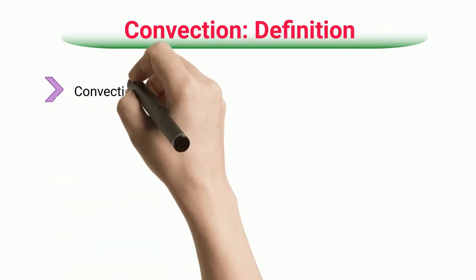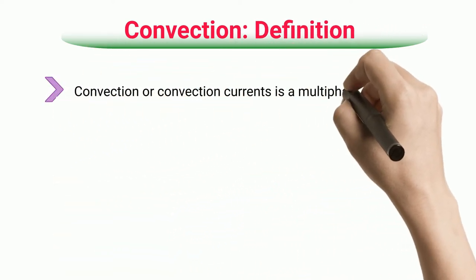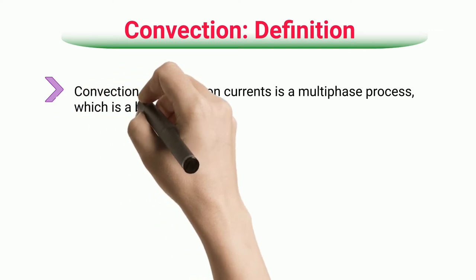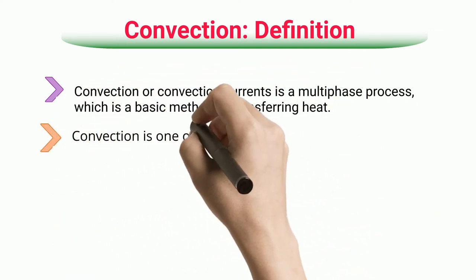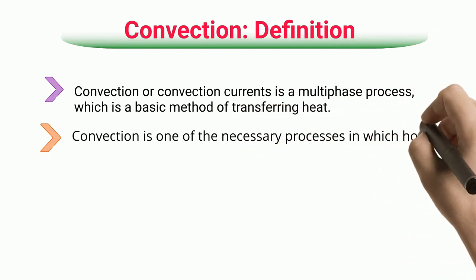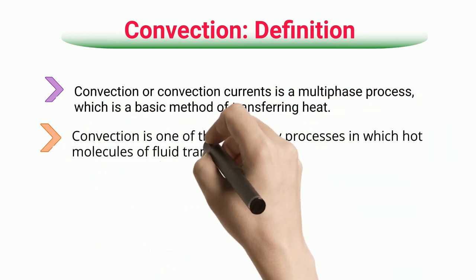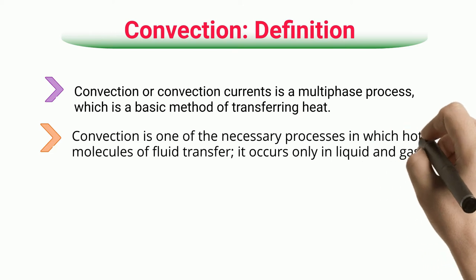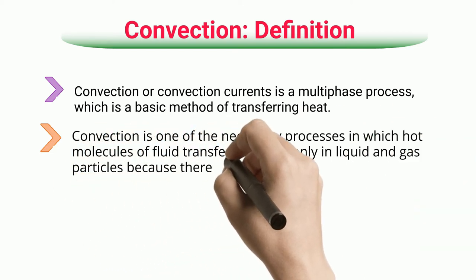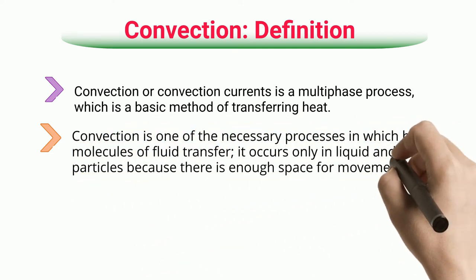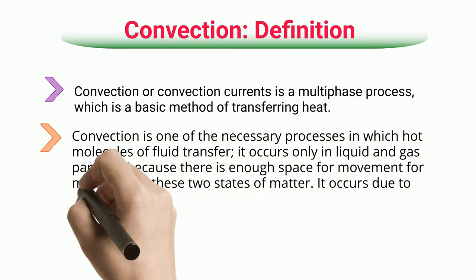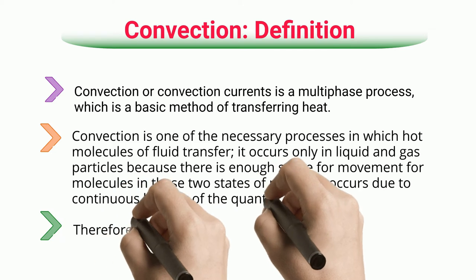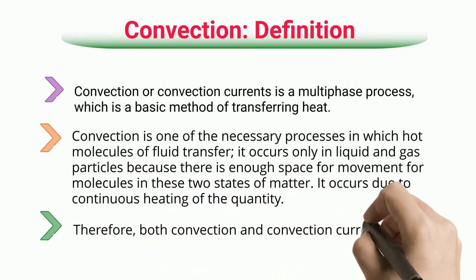Convection — Definition. Convection, or convection currents, is a multiphase process which is a basic method of transferring heat. Convection is one of the necessary processes in which hot molecules of fluid transfer. It occurs only in liquid and gas particles because there is enough space for movement for molecules in these two states of matter. It occurs due to continuous heating of the quantity. Therefore, both convection and convection currents are the same.